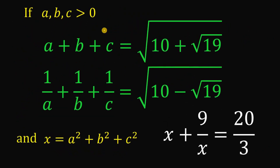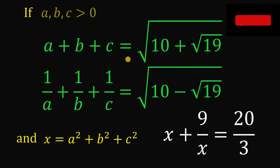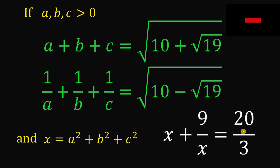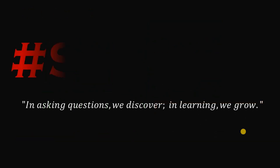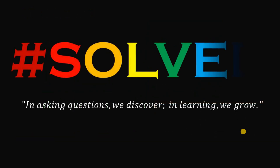Therefore, if A, B, and C are all greater than 0 and given these two equations, the numerical value of X plus 9 over X equals 20 over 3. And as always, we are done. Thanks for joining us.